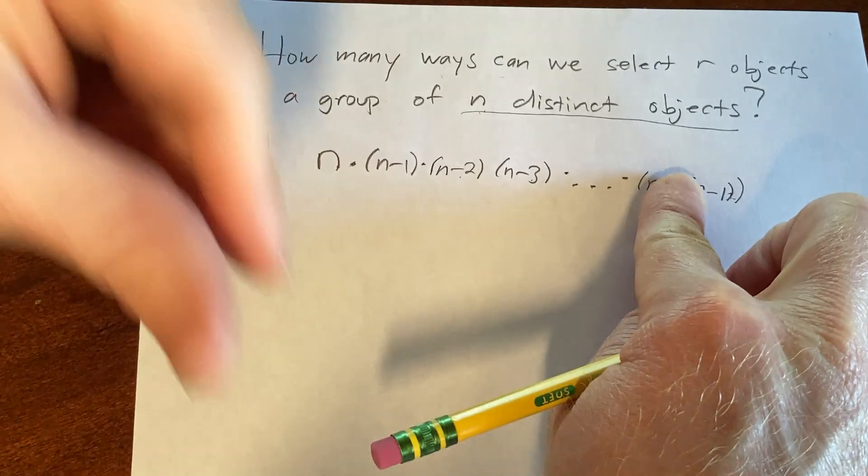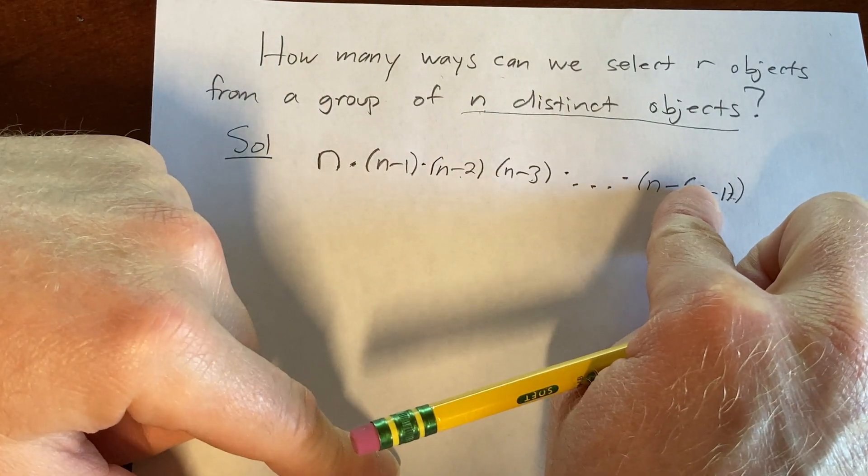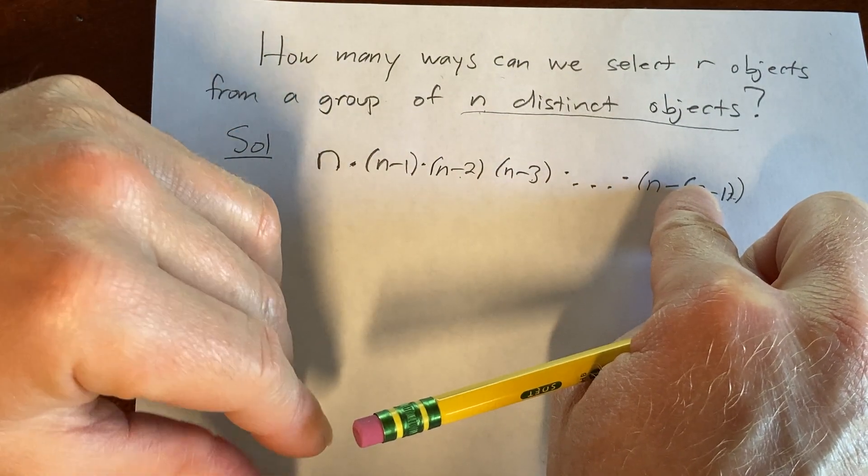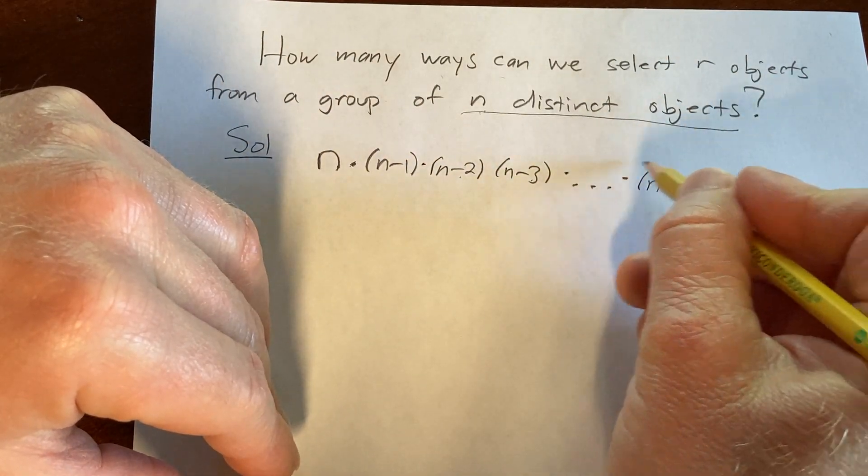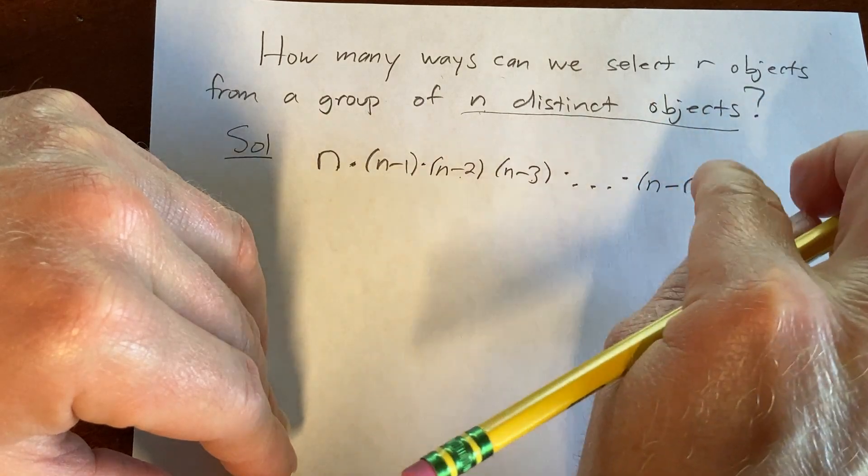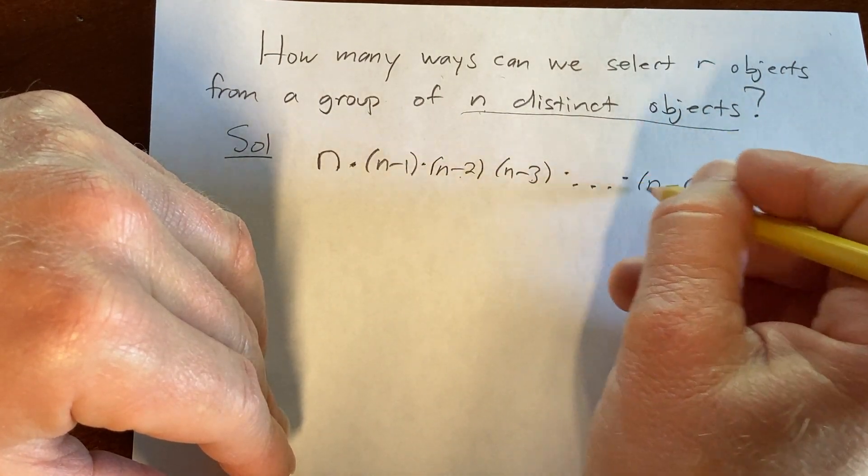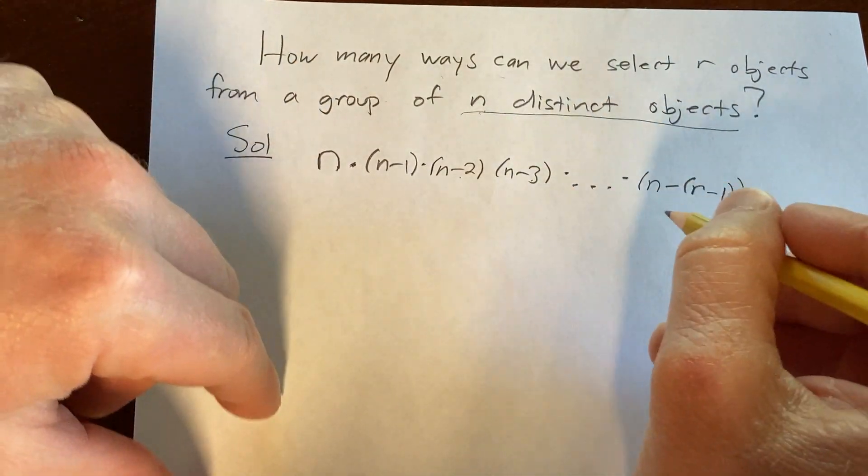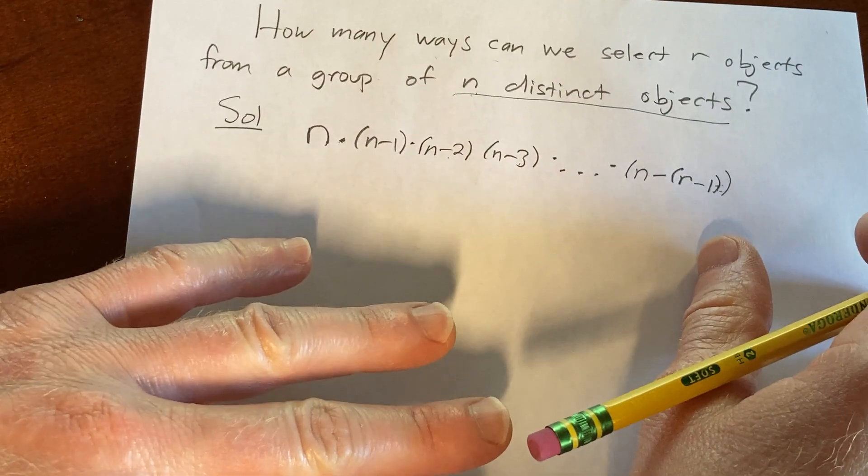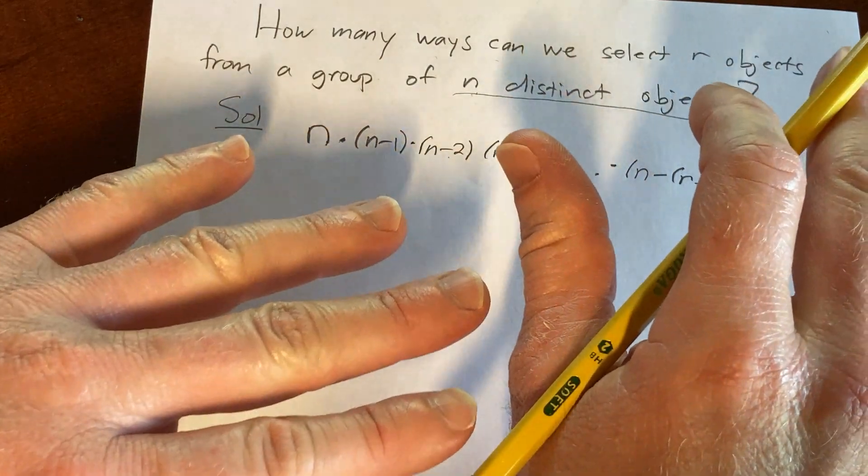We haven't picked r of them yet before we write this down. So we have n minus r minus 1 objects left. So that's how many choices we have for that rth object. This is how many ways we can pick that last object. Now the really cool thing here is that you can write this in a more familiar way.